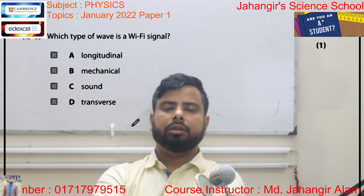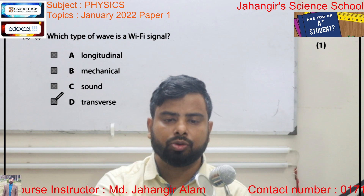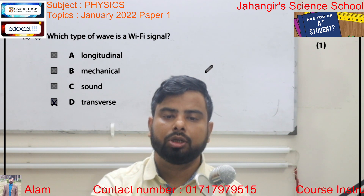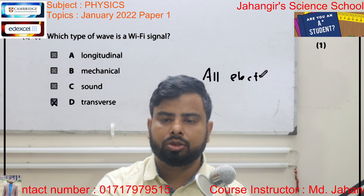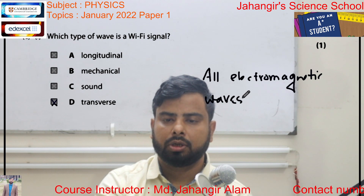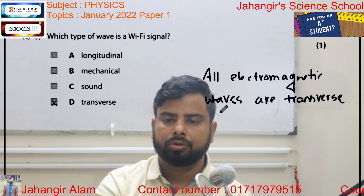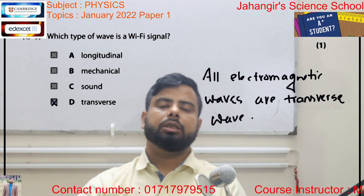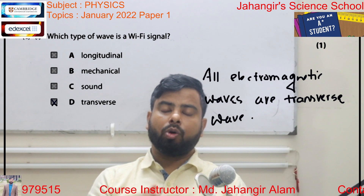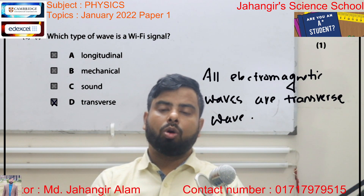Next question, C: which type of wave is a Wi-Fi signal? A Wi-Fi signal is a transverse wave. Listen — all electromagnetic waves are transverse waves. Remember this statement. Electromagnetic waves are the combination of the electric field and magnetic field, while the electric and magnetic fields are at right angles to the direction of propagation of the wave. That's why all electromagnetic waves are transverse waves.